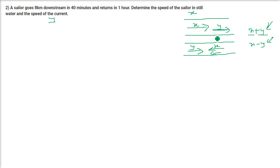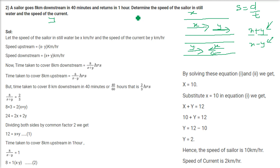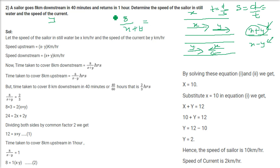We know speed equals distance by time. The sailor goes 8 km downstream; distance is 8 km and time is 40 minutes. Time equals distance by speed, so 8 divided by (X plus Y) equals 40 minutes. Converting 40 minutes to hours: 40 divided by 60 equals 2 by 3. So our first condition is 8 by (X plus Y) equals 2 by 3.